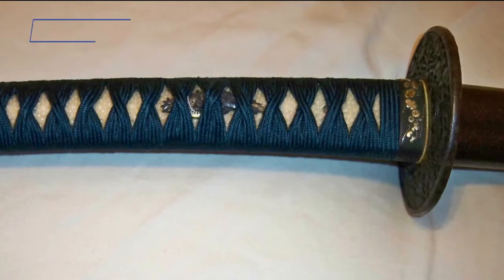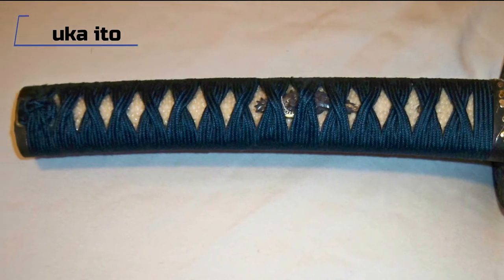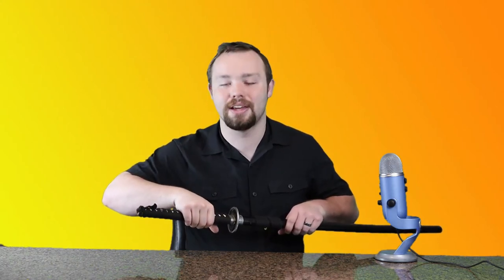On the tsuka, you can see this cord. This cord, it traditionally was made out of silk, and it was called the tsuka ito. Nowadays, it's typically made out of cotton. It has all of these little grooves in it. That was just supposed to help with grip. So let's take that off.